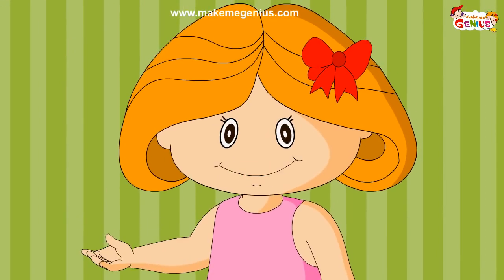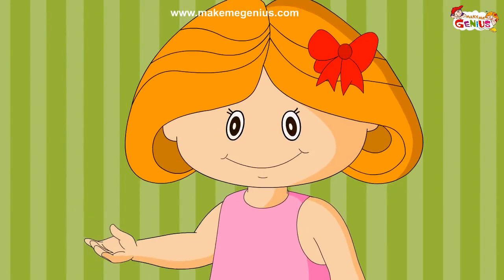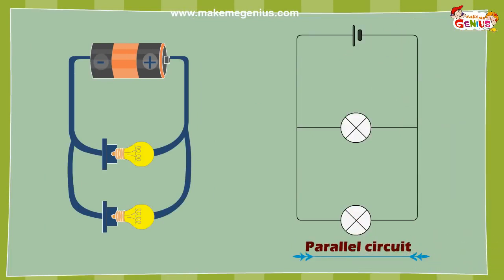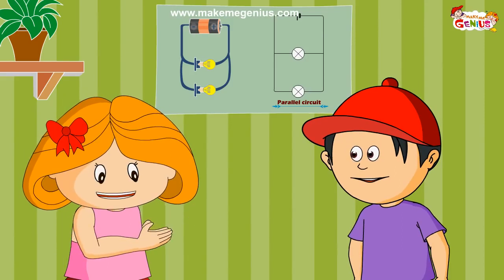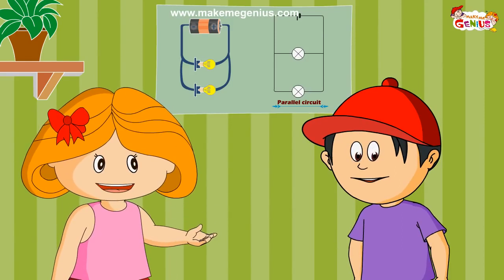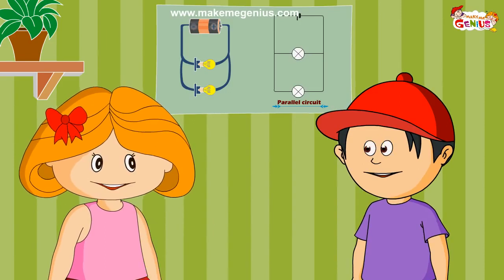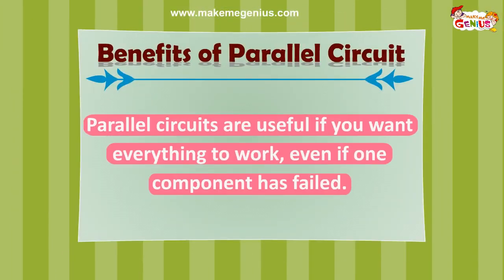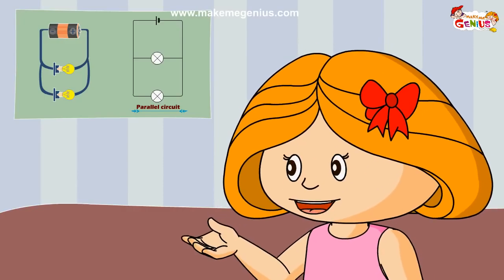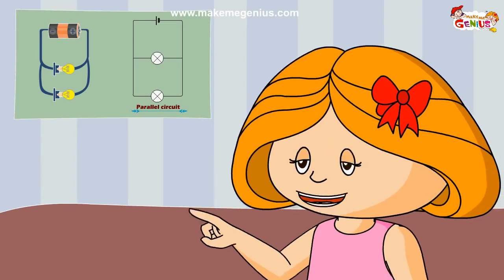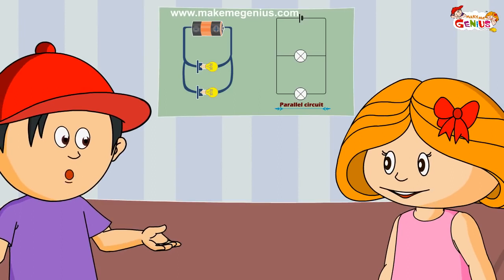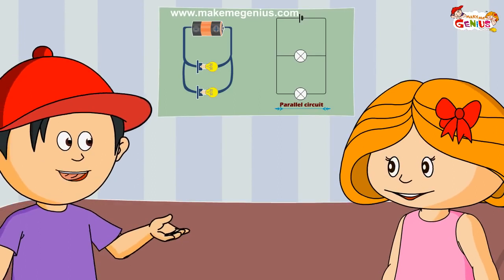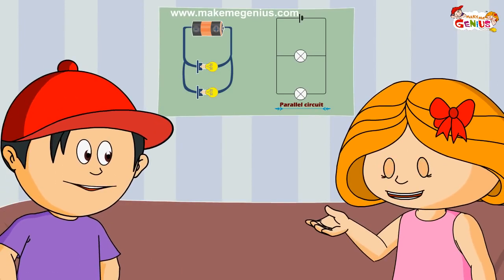Now you have understood the parallel circuit. Can you draw it on the chart? Oh yes — here it is. Is it okay? Perfect. Let's clap for your work. Now can you tell me one benefit of a parallel circuit? Parallel circuits are useful if you want everything to work even if one component has failed. This is why our homes are wired with parallel circuits — so even if one thing goes off, the other things will continue to work. You are a genius scientist.